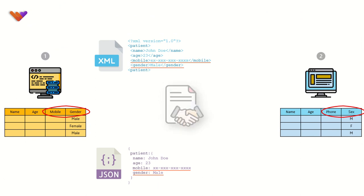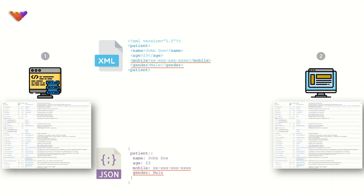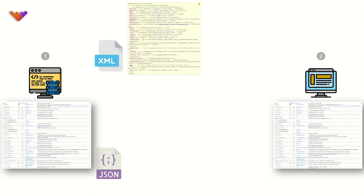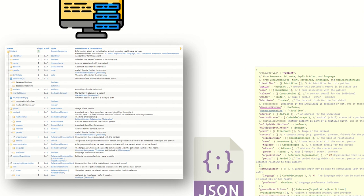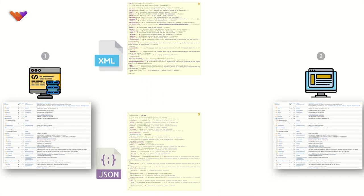Coming back to our previous example, we no longer need the contract if both systems follow the HL7 FHIR specification. What that means is the variations we had in the two tables will be eliminated because both will be as per the structure defined by HL7 FHIR. As a result, whenever these systems share data, there won't be any challenge in interpreting the information because the keys will now be the same irrespective of origin. For example, 'gender' is now 'gender' for both systems and in all data interchange formats. Therefore, we can say that the specification itself becomes the contract.